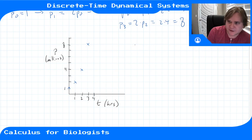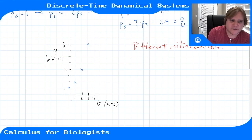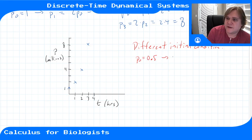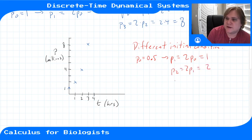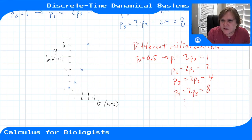What happens if we start with a different initial condition? We'll step through the same discrete time dynamical system but follow a different trajectory. Let's say we start at p0 = 0.5 million. Then p1 = 2 × 0.5 = 1 million, p2 = 2 million, p3 = 4 million, and we could keep going.